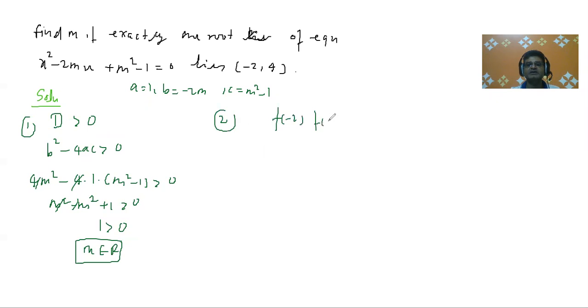For second one, f(-2) and f(4) should be less than 0. Then what is f(x)? The f(x) is nothing but the quadratic equation itself. f(x) = x² - 2mx + m² - 1. So we are putting -2 here. So it is 4 + 4m + m² - 1.